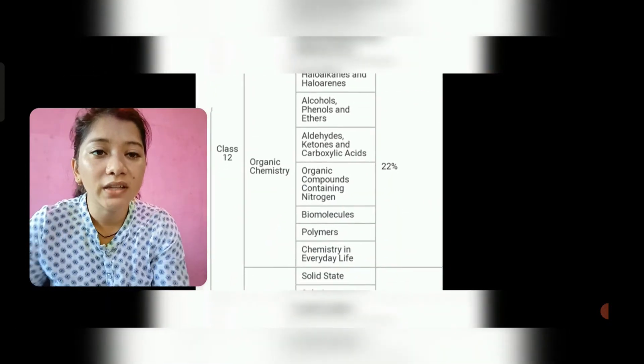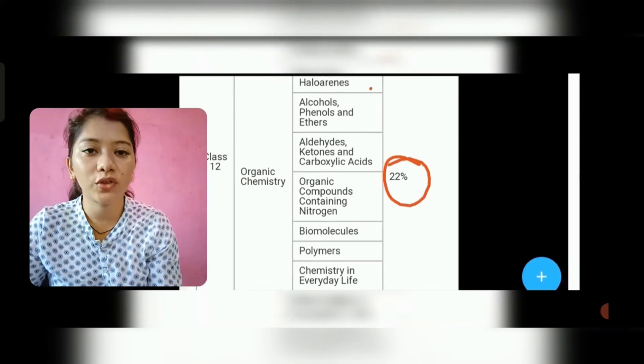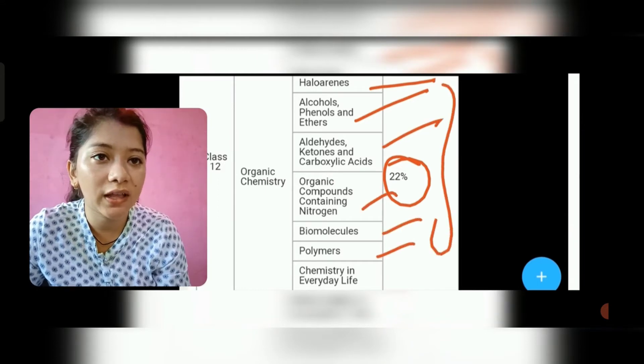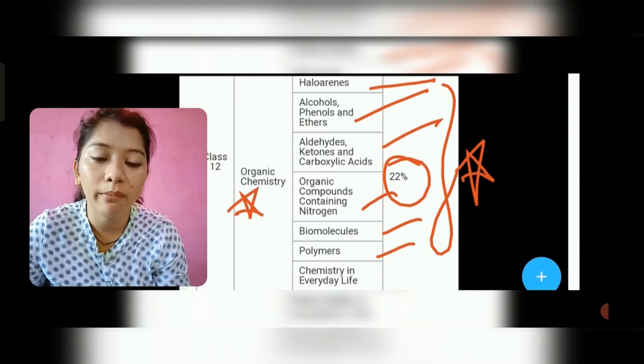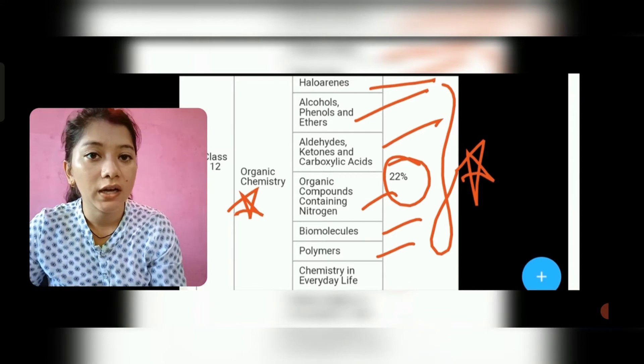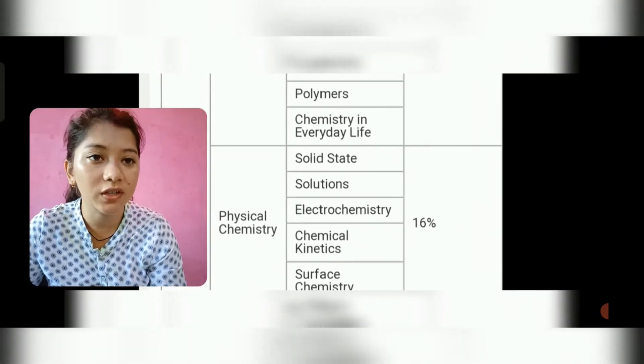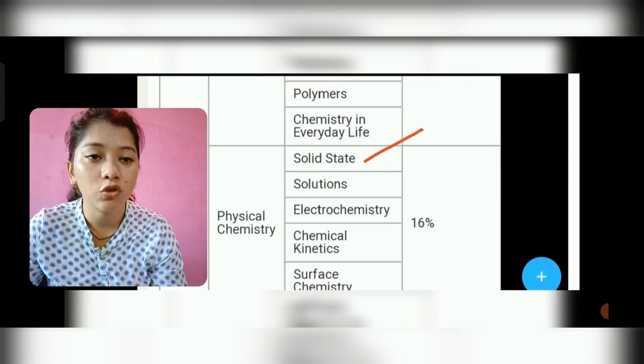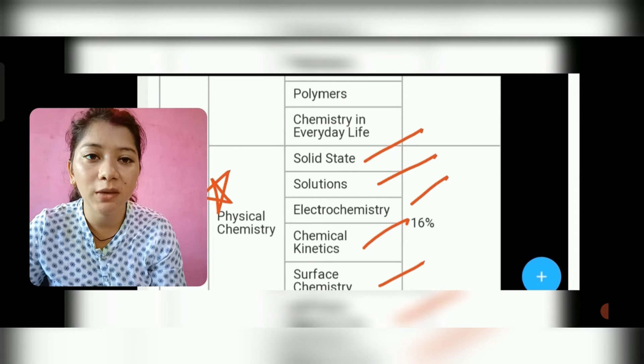After that we will talk about the 12th organic chemistry. You know the 12th organic chemistry is the most important. Since the 11th chapter is not in the 11th, many things come from here: haloalkanes, alcohol, phenol, aldehyde, nitrogen, biomolecules, polymer chemistry in everyday life. This chapter is important for the 12th organic chemistry. It must be covered in the syllabus. As to physical chemistry, here is the tip of the numericals: solid state, solution, electrochemistry, chemical kinetics, and surface chemistry.